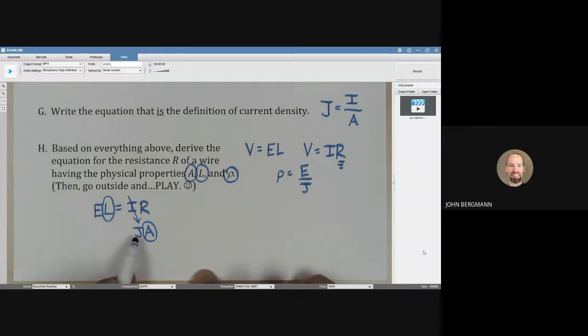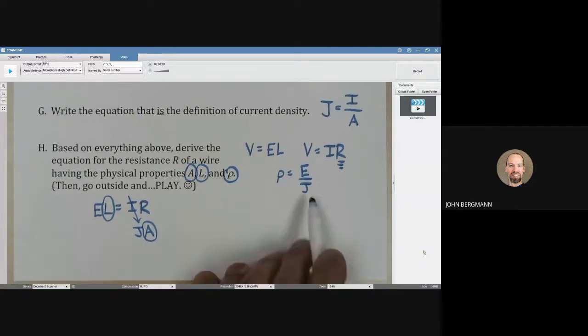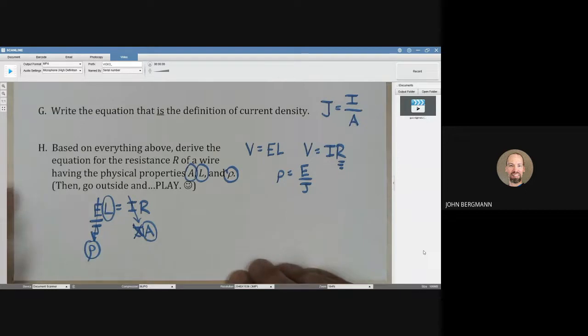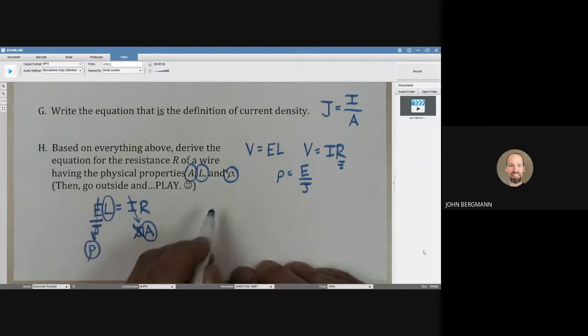But E and J are no good. We can't have those. E and J, let's see. That's in that equation right there. Let me put the J on the other side. Divide both sides by J. It disappears there. And then E over J turns into rho. And rho is okay. So, it looks to me like R is going to equal rho times L divided by A.